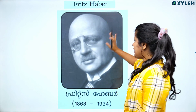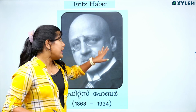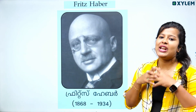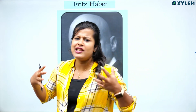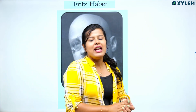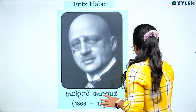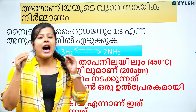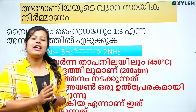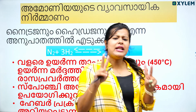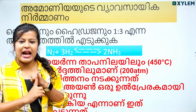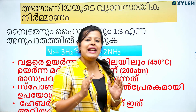Fritz Haber — this is the Haber process. Haber prepared ammonia for industrial use. You can learn how to prepare ammonia in the industry. You will find two names involved. One is nitrogen. Ammonia is called NH3.